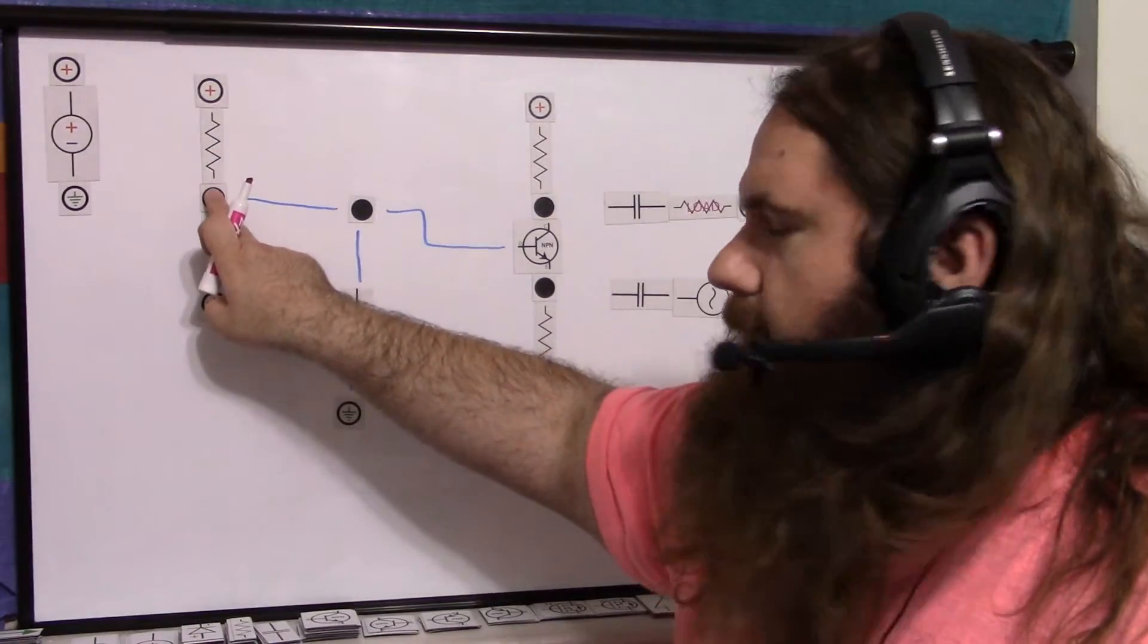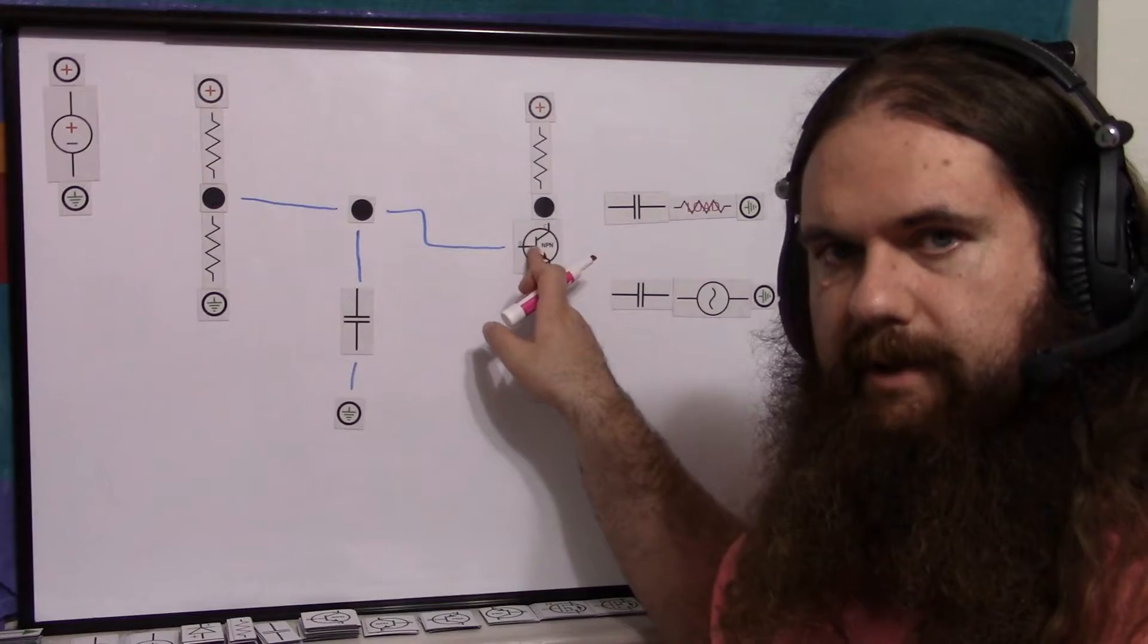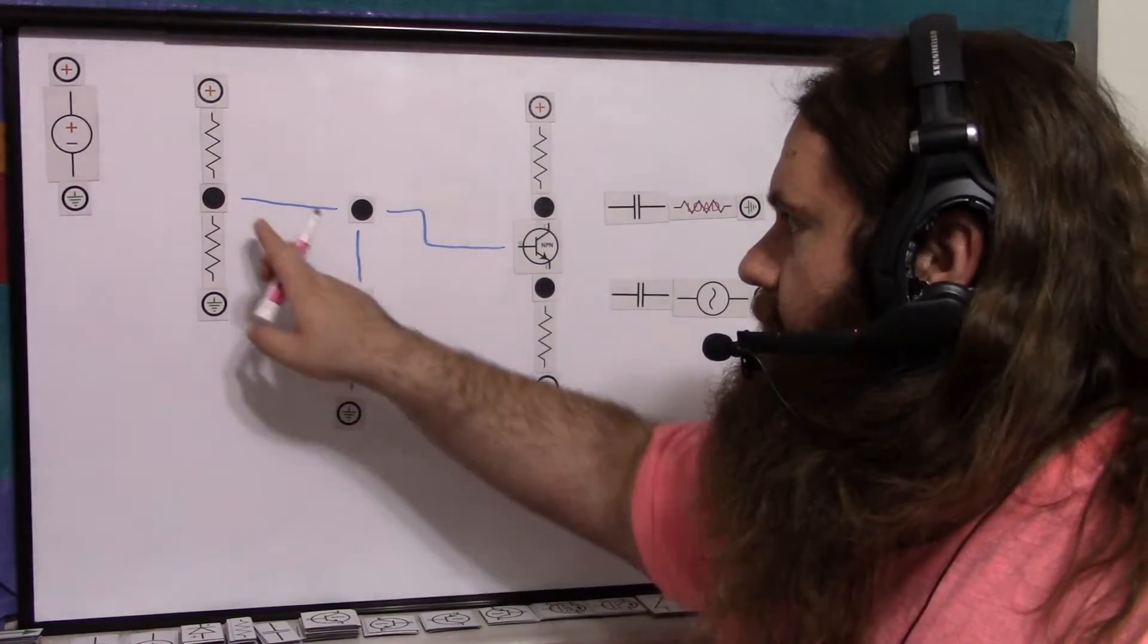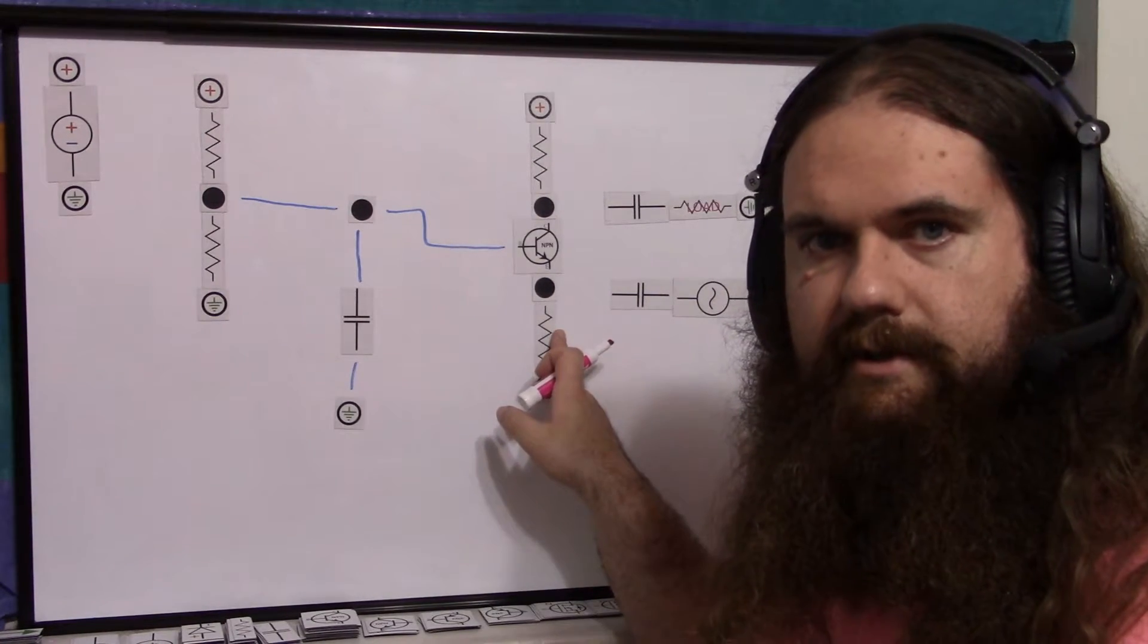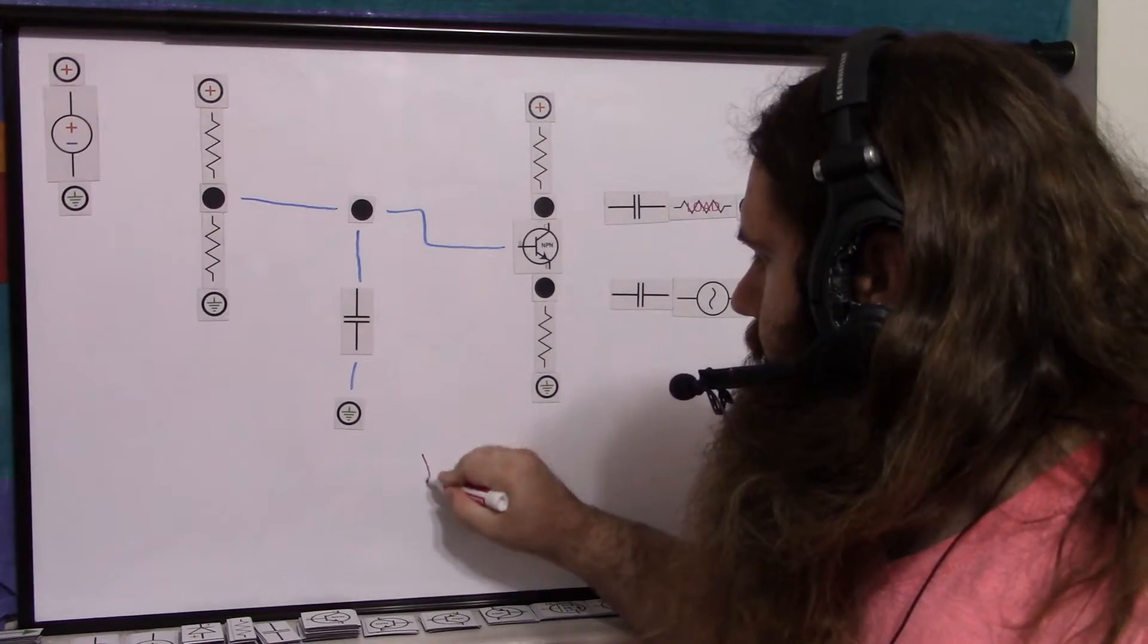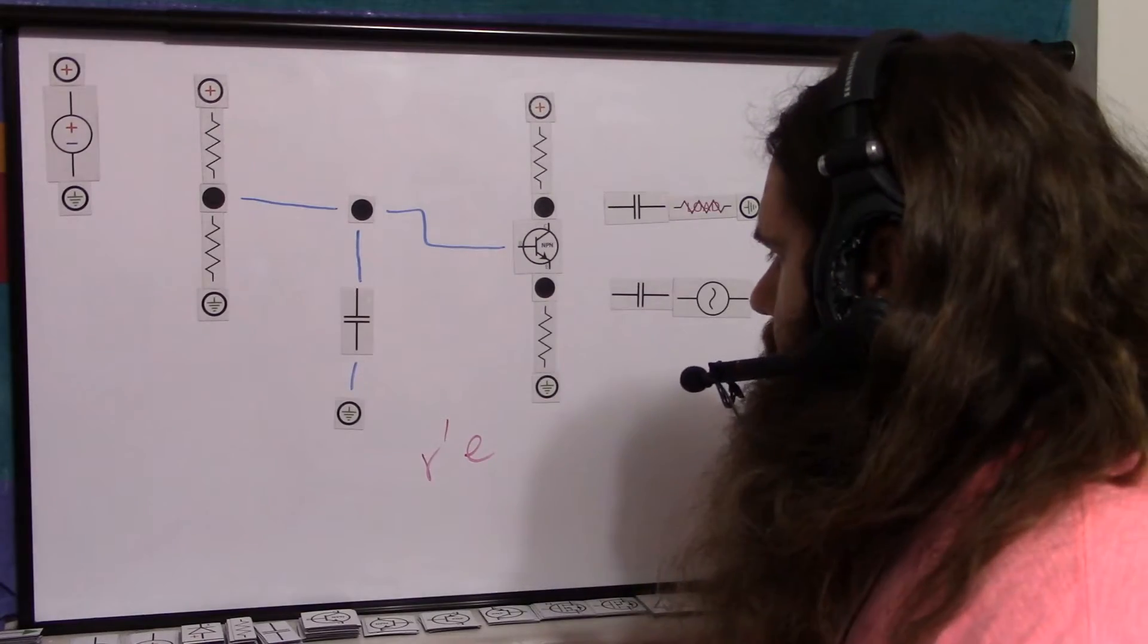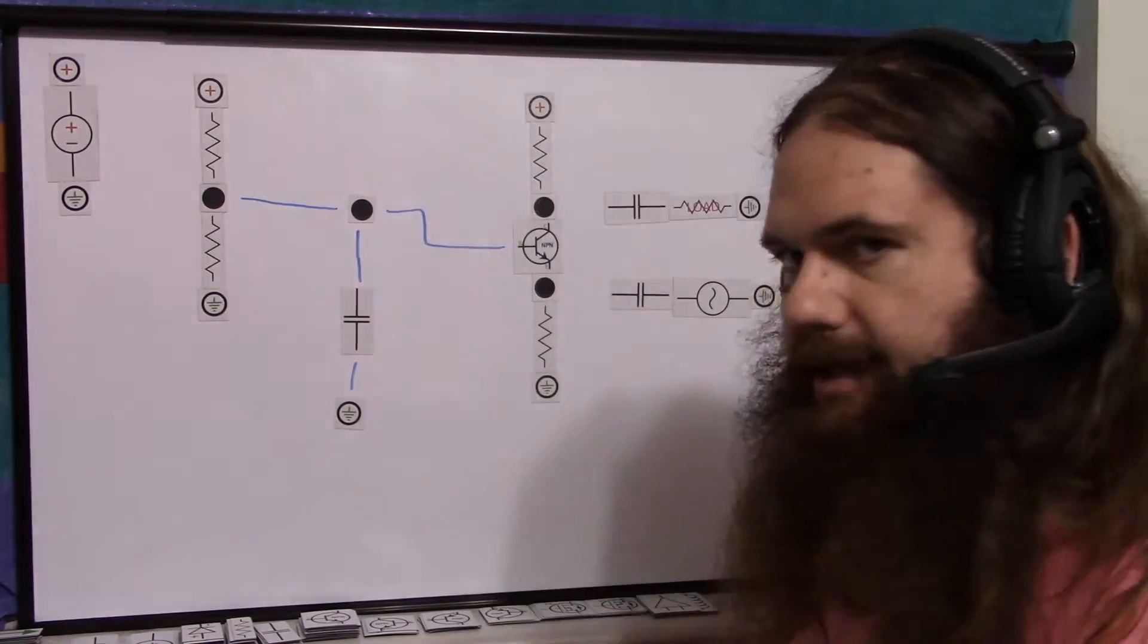So your voltage divider gives you your bias voltage at quiescence. You have a certain base emitter voltage drop, so your emitter voltage is just bias minus that. And then your emitter current is voltage divided by resistance. You can calculate your r'e from that current, and then you get your rough gain. Of course, nothing's being amplified, but it's just baseline.